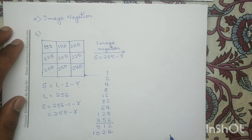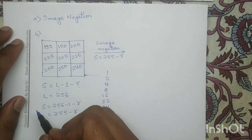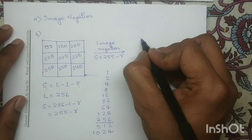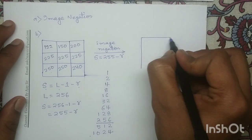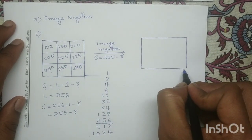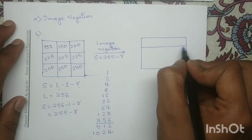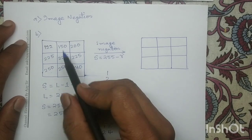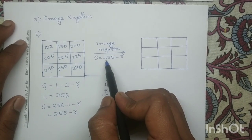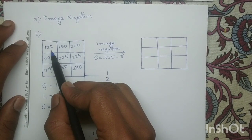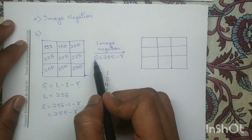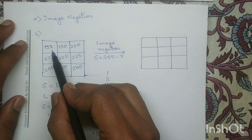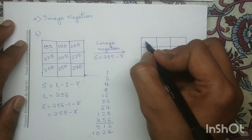In order to draw the output image, I have to check the dimension of the given input image. The dimension is 3 cross 3, so the output image is also 3 cross 3. For each pixel value, I will apply the equation 255 minus R. For the pixel with value 122, applying the equation gives 255 minus 122, which equals 133.